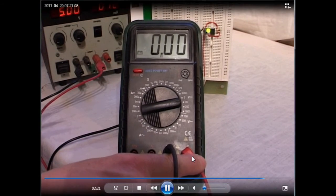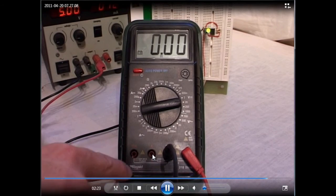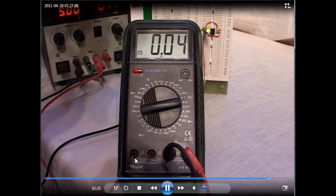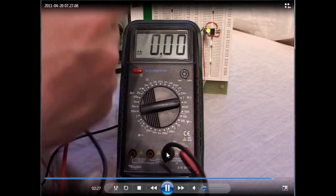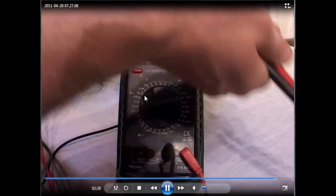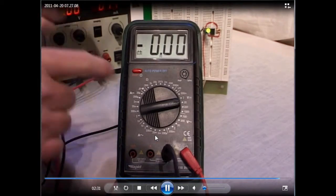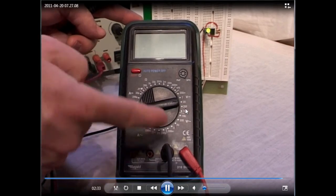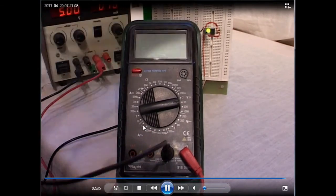If you want to measure current, this probe must go into either this socket or this socket. The common probe stays where it is, and you use the current range. It's very important you select the correct parameter for what you are trying to measure.